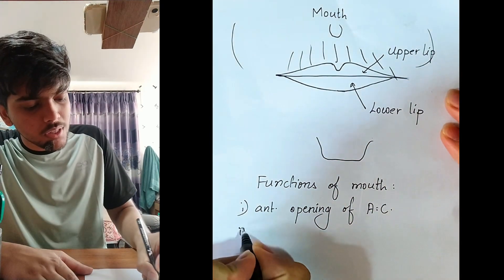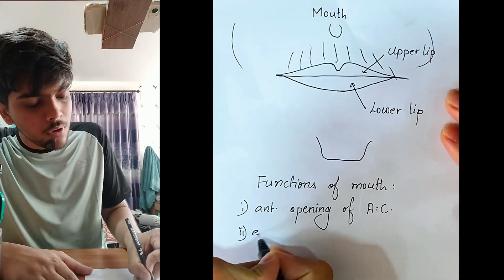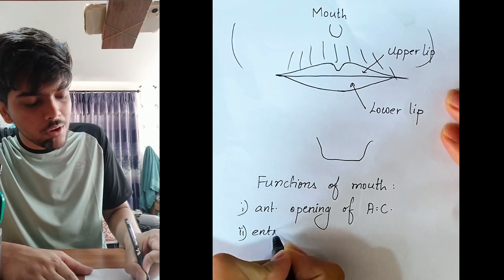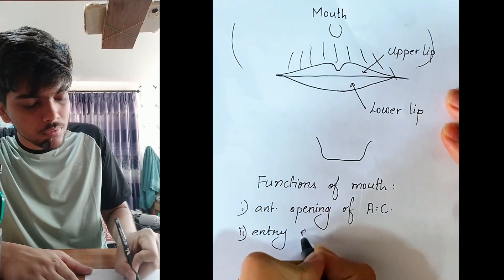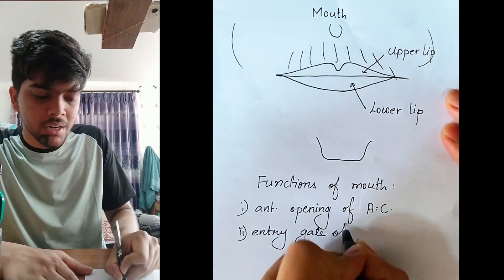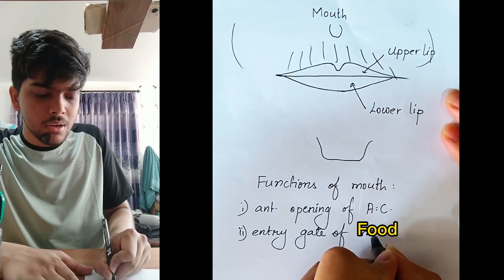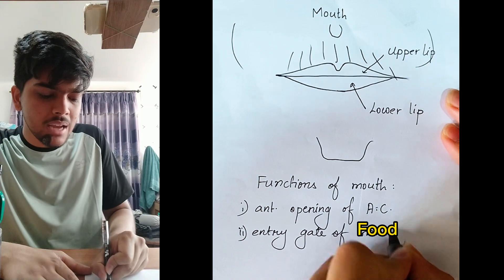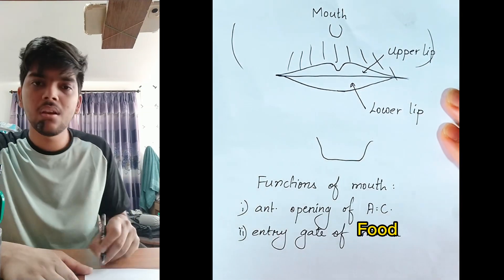Second function: it forms the entry gate for food. Food enters through the mouth, and undigested food exits through the anus.